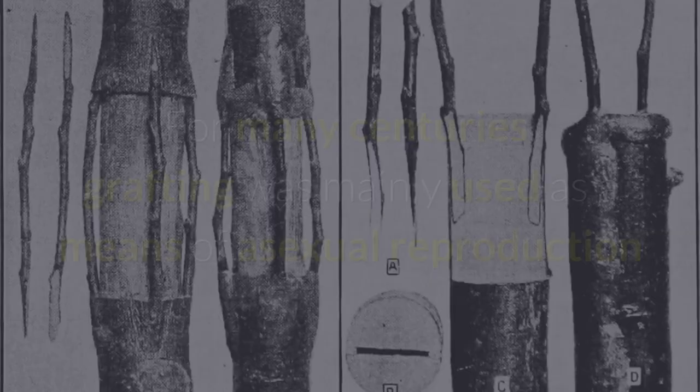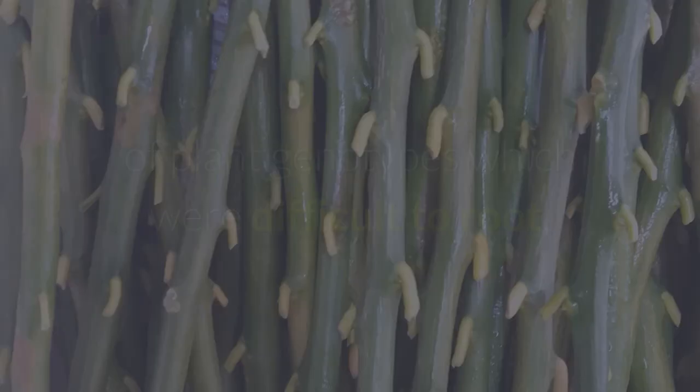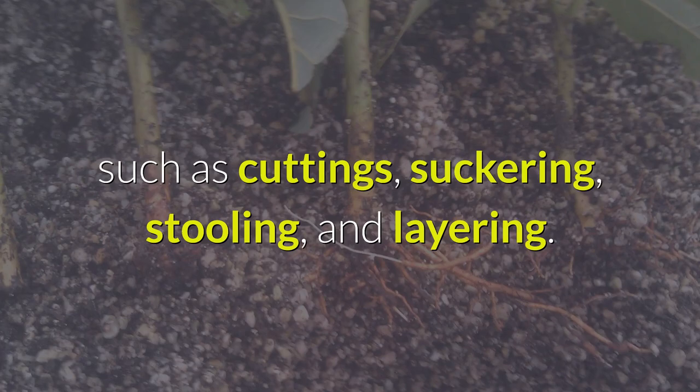For many centuries, grafting was mainly used as a means of asexual reproduction of plant genotypes which were difficult to root by using other methods of asexual propagation, such as cuttings, suckering, stalling, and layering.